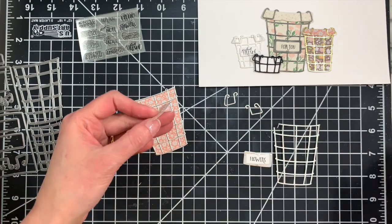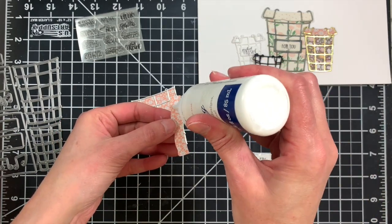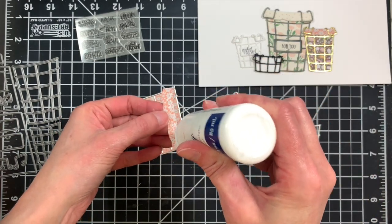And then we're going to go ahead and add the ruffle to the top. I'm just going to use some metal liquid adhesive and attach that right along the top edge.